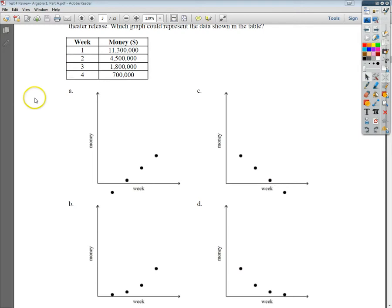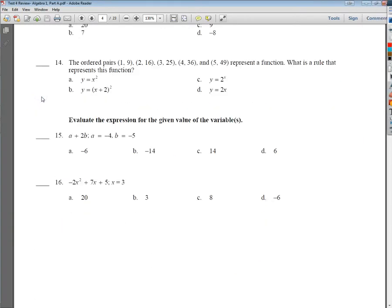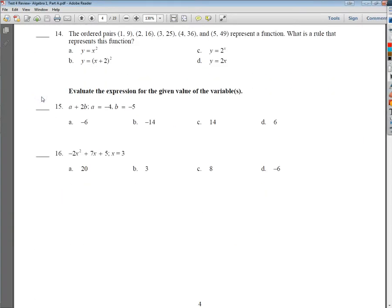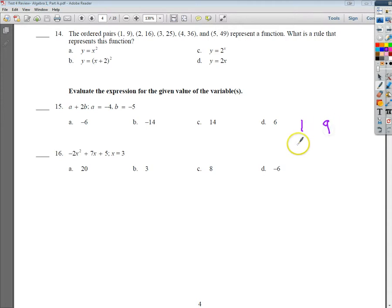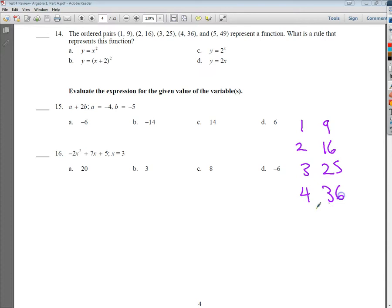Now, number 14. Number 14 is relatively easy if you know what a specific set of numbers looks like. So what I'm going to do is make a table out of the information. So 1 and 9, 2 and 16, 3 and 25, 4 and 36, 5 and 49.